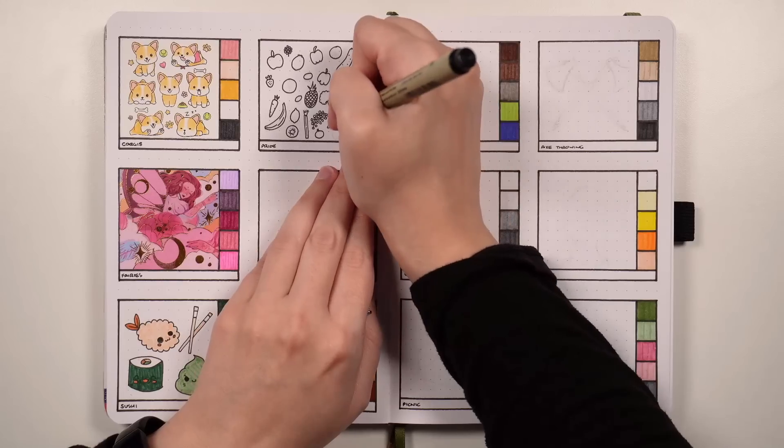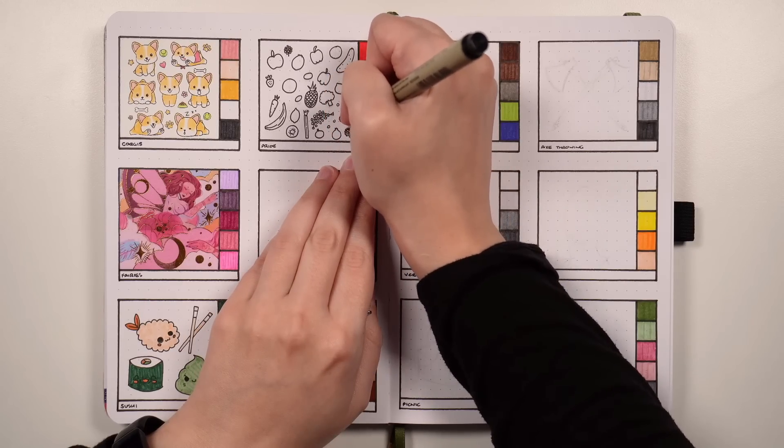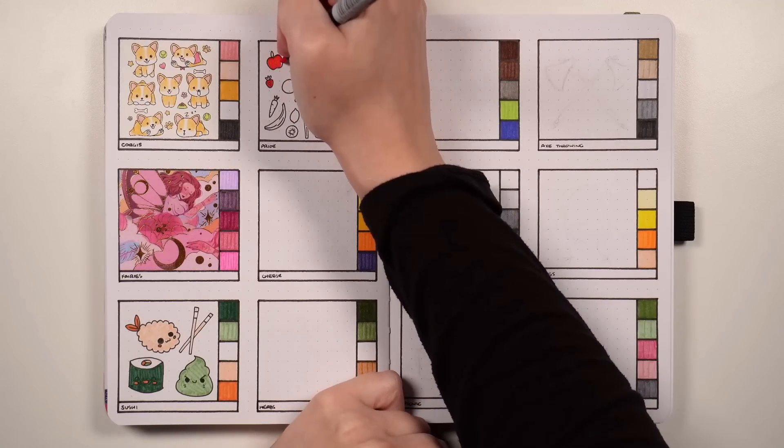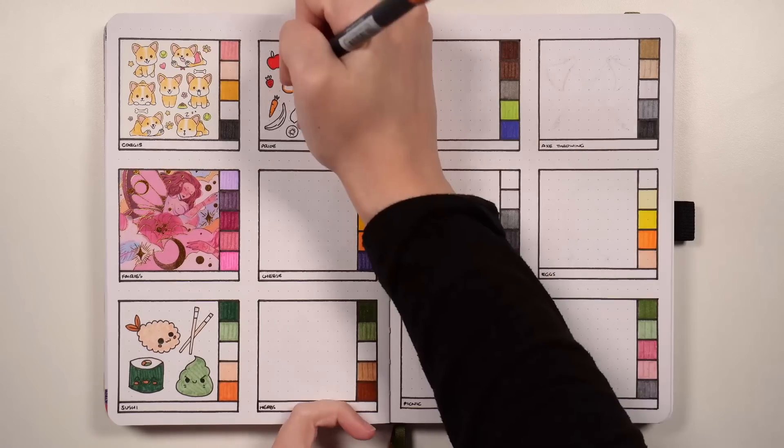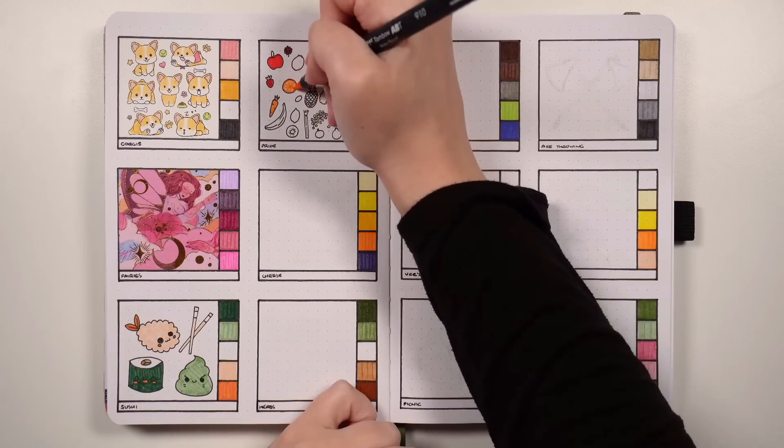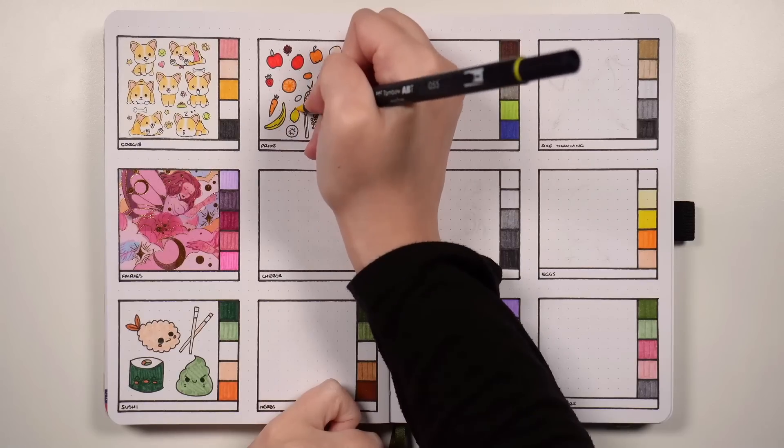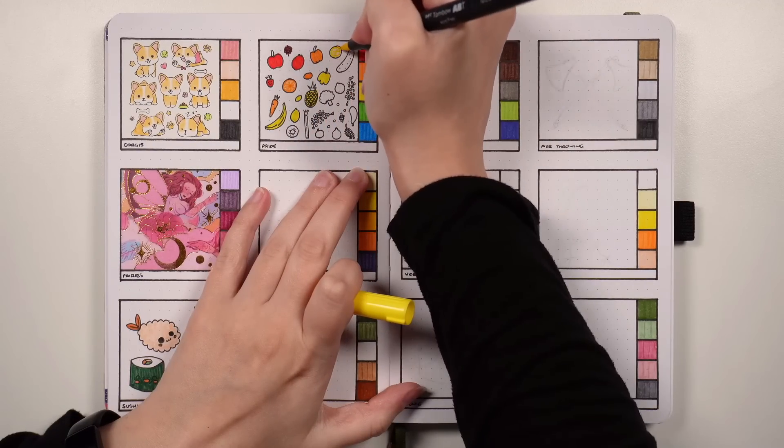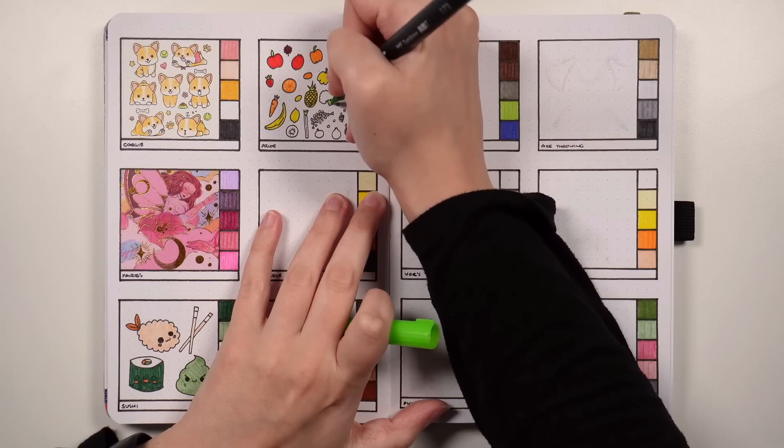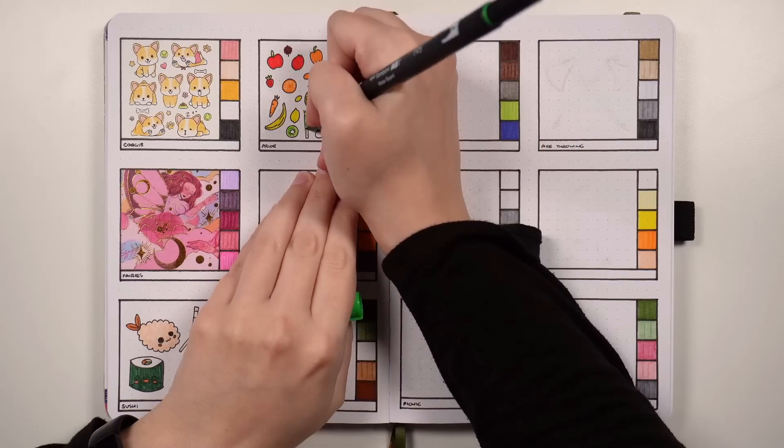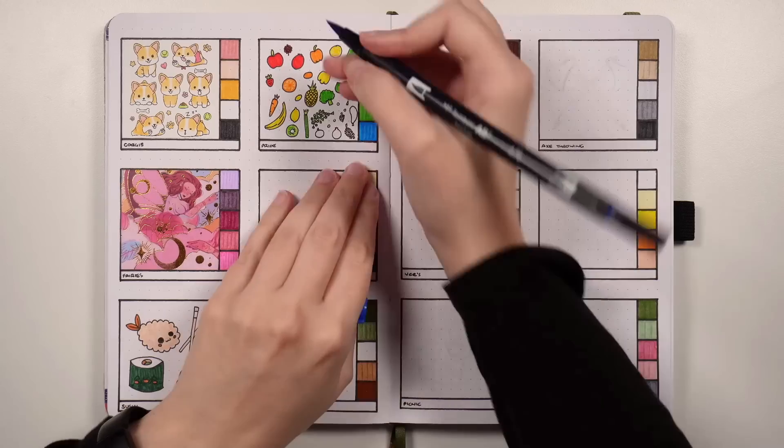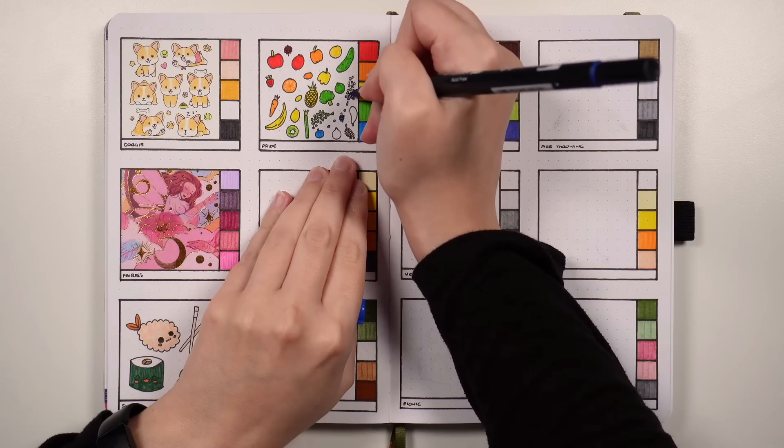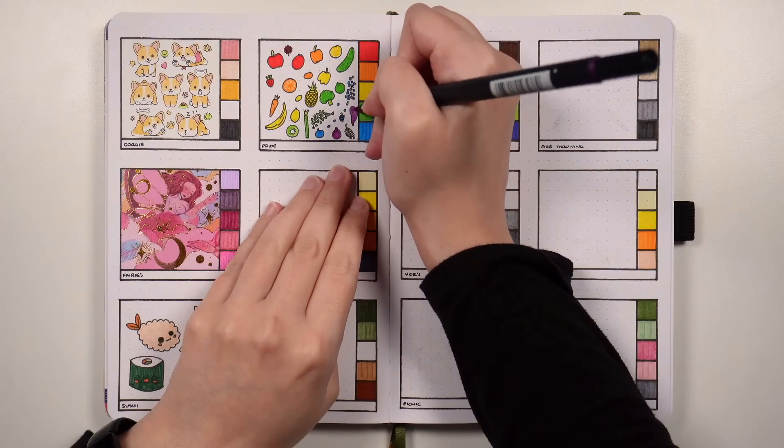You could do the same thing for pretty much anything else, so maybe go with a books theme, but the books are in the colors of one of the pride flags. Go with a music theme, but again using that specific color palette. Really anything you want. I do appreciate that with doing these themes in our bullet journals, we don't just have to stick to the traditional colors of anything. For instance, you could do the corgis theme, but instead of having kind of regular coloration of a corgi, you could go with purple corgis, or blue corgis, whatever you want. It is your journal.